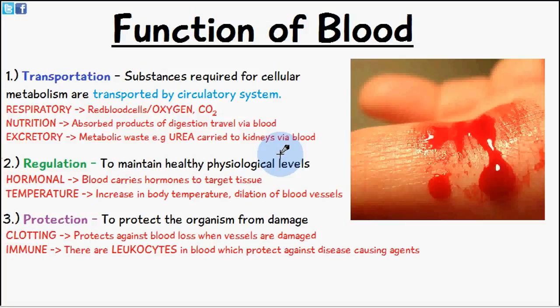In the case of the respiratory system, red blood cells travel through the blood. Red blood cells contain oxygen, and carbon dioxide, which is excreted from the body, is also traveling through the blood. Another case is nutrition, where the absorbed products of digestion travel via blood to reach the cells which require the nutrients.